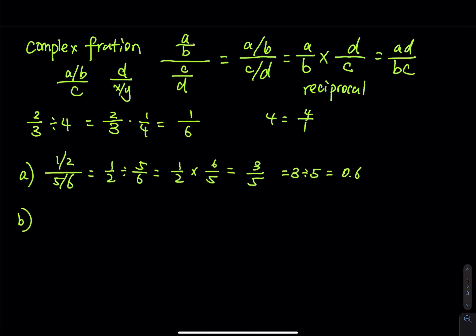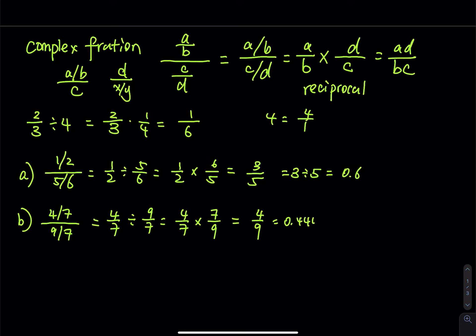Part B: 4 over 7 divided by 9 over 7. That is 4 over 7 multiplied by the reciprocal 7 over 9. The 7s cancel, giving 4 over 9. Then 4 divided by 9 equals 0.4444... with the 4 repeating forever. If you want to keep two decimal places, it's approximately equal to 0.44.